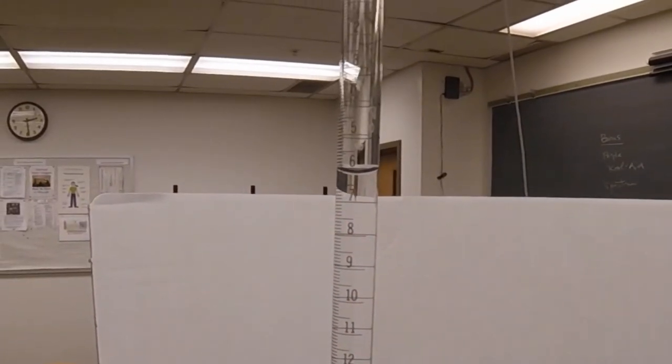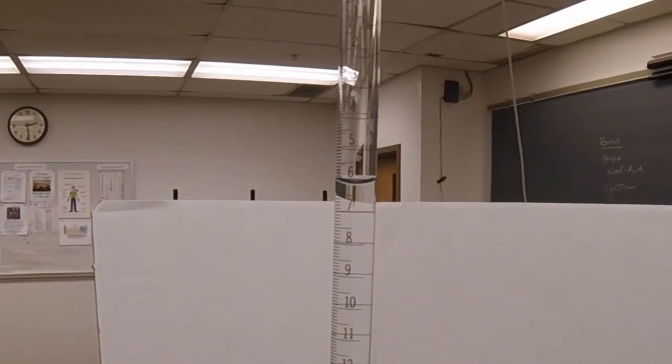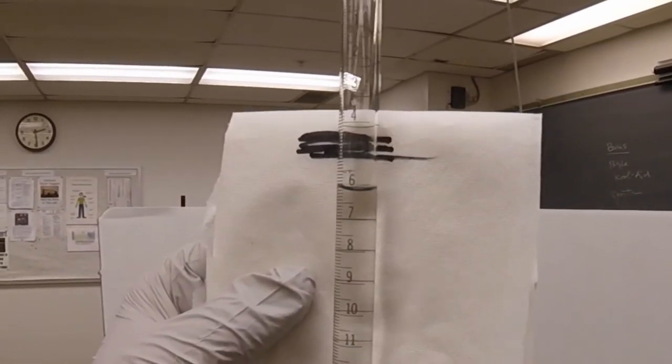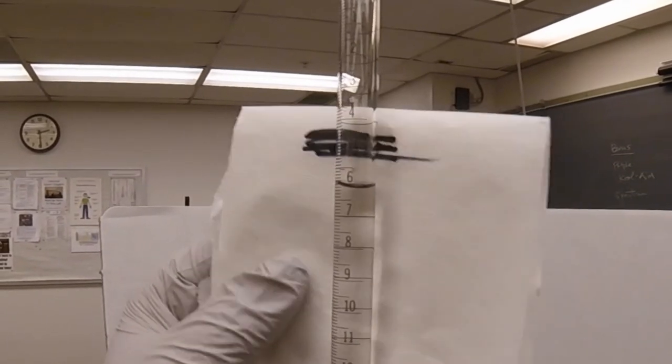When you read this, as you've known, you have to approximate to one extra decimal place. The initial reading for this buret is 6.10.